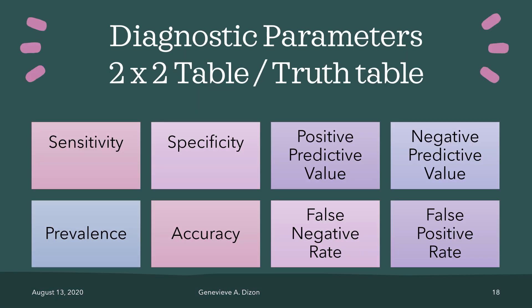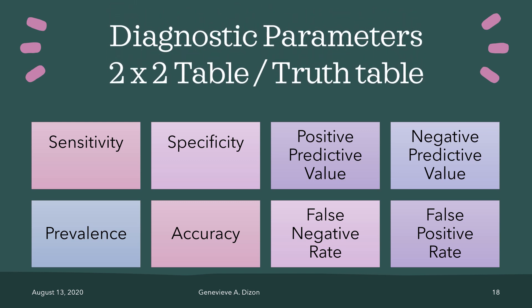That ends our discussion about the different diagnostic test parameters using a 2x2 table, or the truth table. We have discussed sensitivity, specificity, positive predictive value, negative predictive value, prevalence, accuracy, false negative rate, and false positive rate. For a diagnostic test to be reliable, both sensitivity and specificity should be very high — the closer to 100%, the better. A high sensitivity rate gives a very low false negative rate, and a high specificity gives a very low false positive rate.